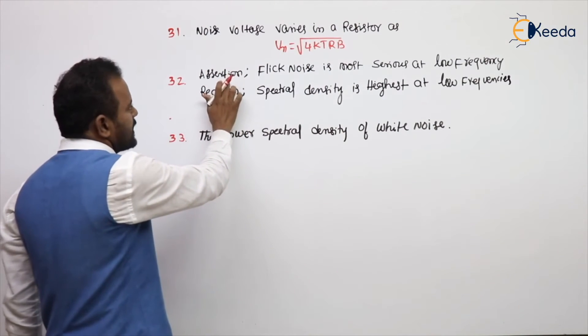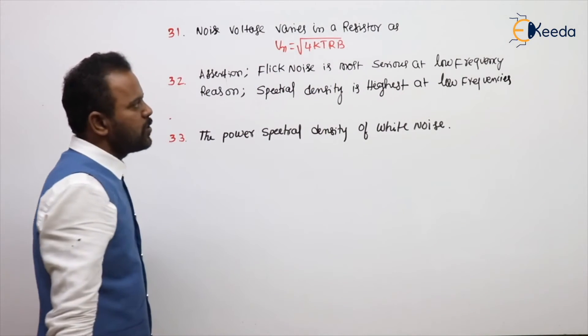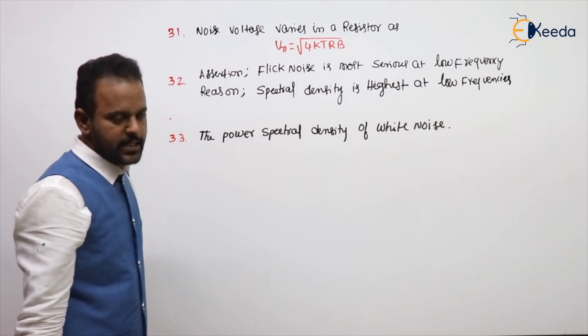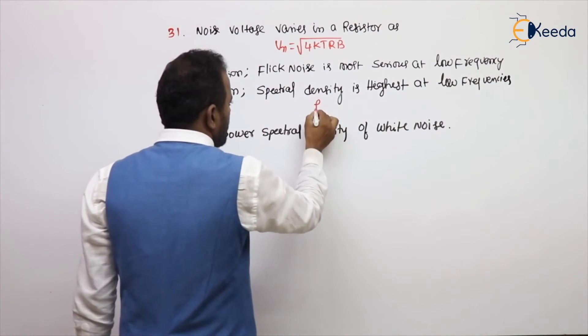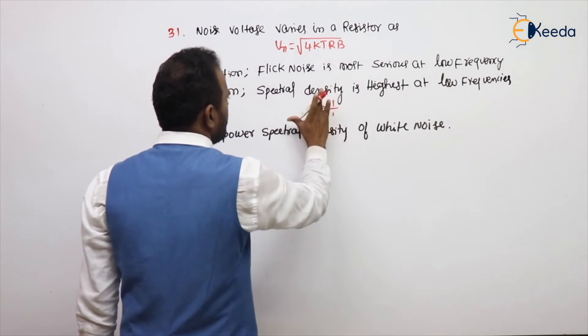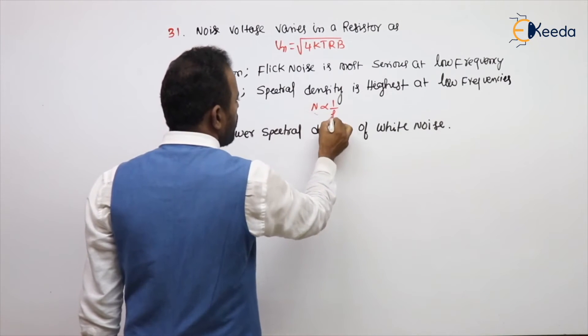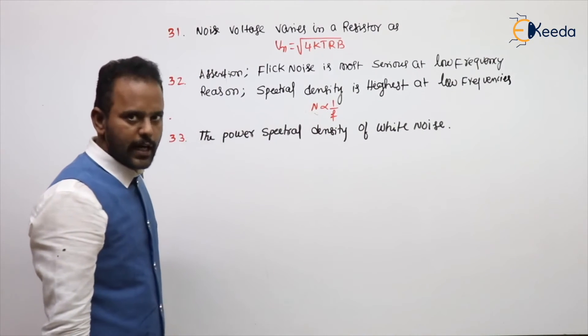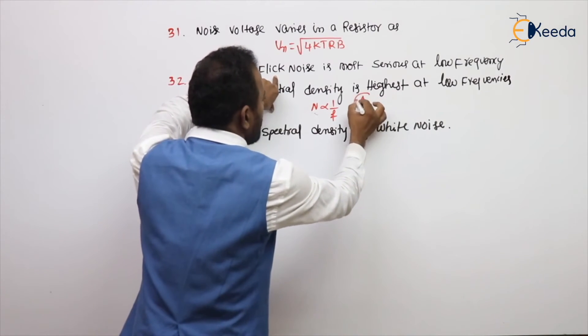Next question, assertion: Flicker noise is most serious at low frequency. Yes. Spectral density is highest at low frequency. Why? Because F is directly proportional to - reverse - noise power N is directly proportional to 1 by frequency. Both are correct and this is a correct reason also. So you need to choose option A.